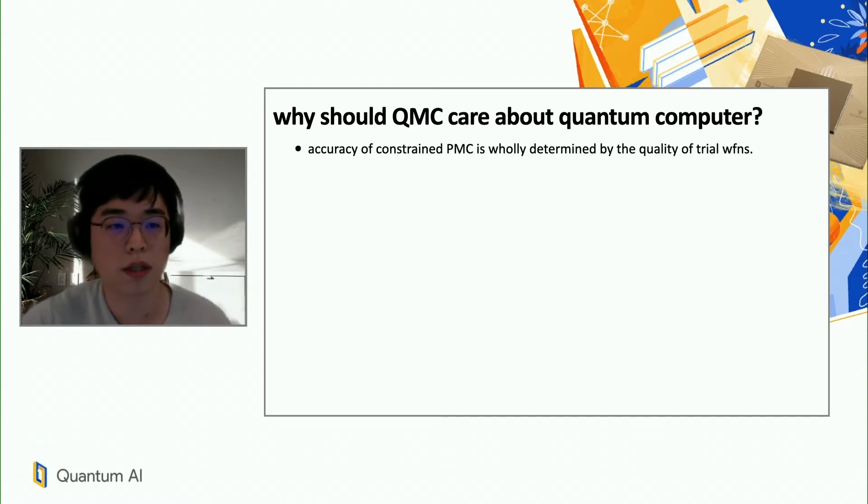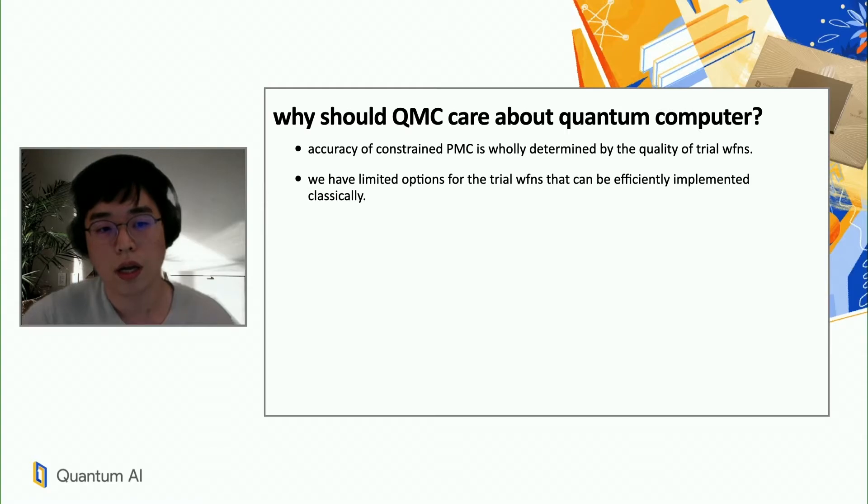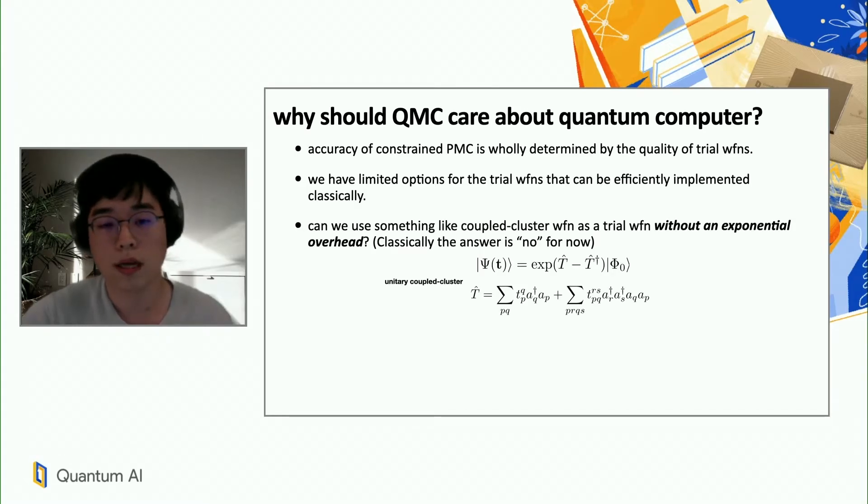Accuracy of constraint PMC is really determined by the quality of trial wave function as I showed you just now. And we have limited options for the trial wave function that can be efficiently implemented classically. So one example that is actually difficult to implement efficiently classically, can we use something like coupled cluster wave function as a trial without an exponential overhead? The answer is at least no for now, classically. And if you haven't seen this coupled cluster wave function before, just think of it as some complicated quantum wave function that can only be efficiently implemented on the quantum computer, at least right now.